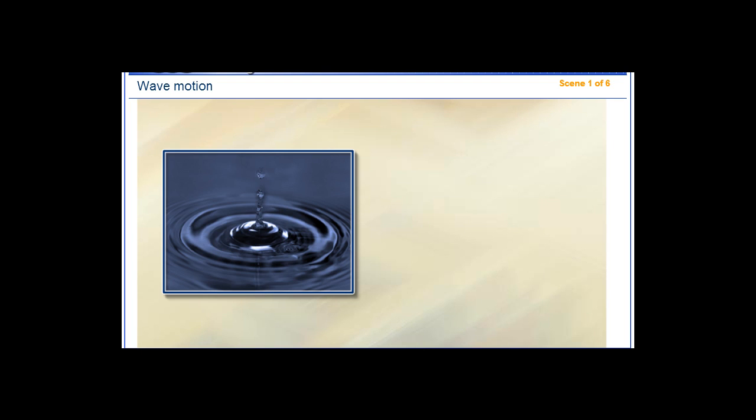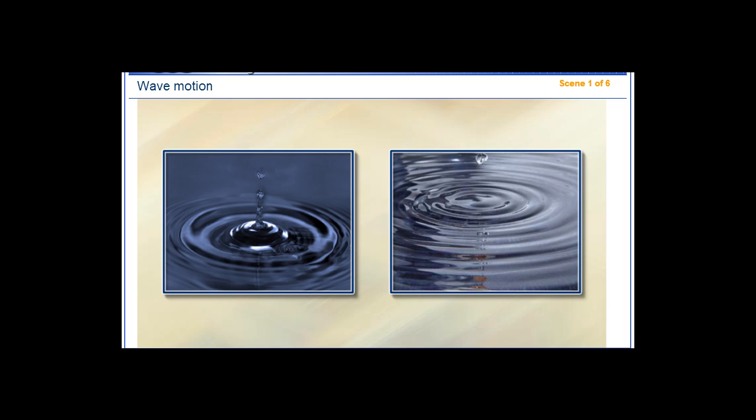Wave motion. Have you ever noticed what happens when some water drops fall on the surface of still water? The propagation of concentric circles on the water represents a wave motion.